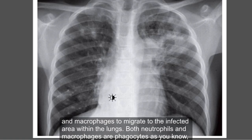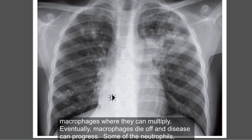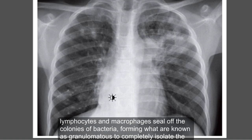Within the lungs, both neutrophils and macrophages are phagocytes, which engulf pathogens in an attempt to get rid of the infection. However, the bacteria are strong enough to survive within macrophages, where they can multiply. Eventually macrophages die off and the disease can progress.